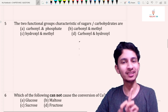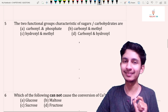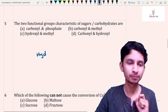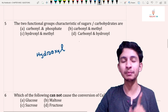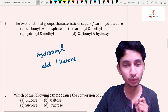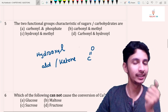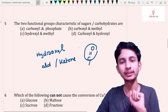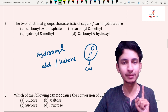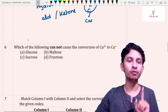Question number five: the two functional groups characteristic of a carbohydrate. By definition, a carbohydrate must have one hydroxyl group and another group that is either an aldehyde or a ketone — because in carbohydrates the carbon has a double bond with oxygen. The answer is option D: carbonyl and hydroxyl.